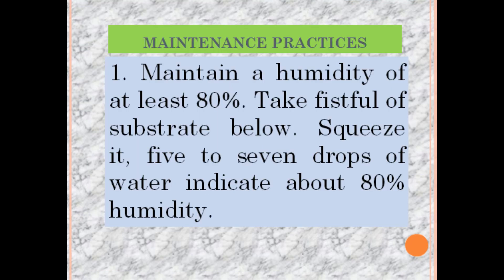These are the very important maintenance practices in vermicomposting. Number one: maintain humidity of at least 80%. To determine this, take a fistful of substrate from below and squeeze it — there must be five to seven drops of water, which indicates about 80% humidity.